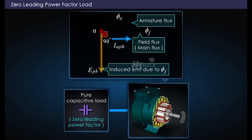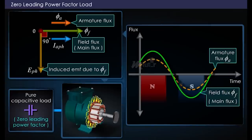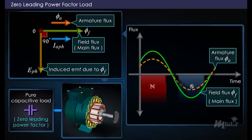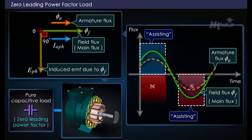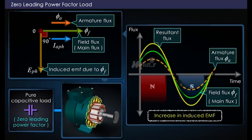Thus, both the main flux and armature flux are in the same direction. From the waveforms displayed on screen, both the main and armature fluxes are in the same direction under each pole, so they assist each other, resulting in the addition of fluxes. This increased resultant flux in the air gap leads to an increase in the EMF induced in the armature, which results in an increase in the terminal voltage.